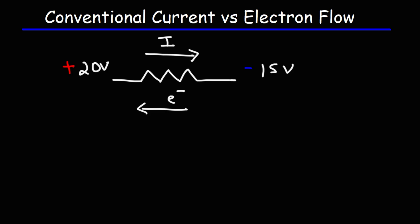So make sure you understand this. Conventional current represents the flow of positive charge, which goes from high potential to low potential. Electrons flow in the other direction — they flow from a region of low potential to a region of high potential.